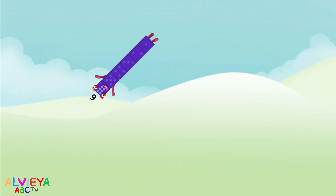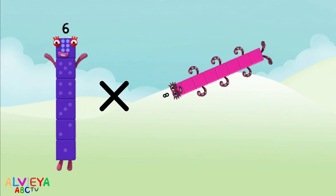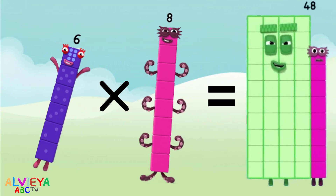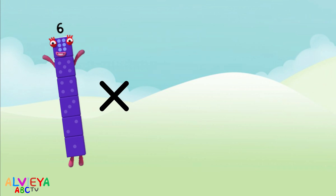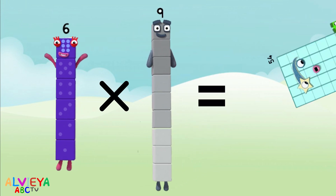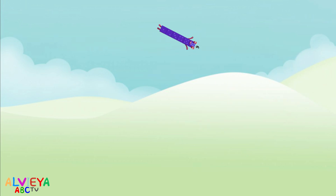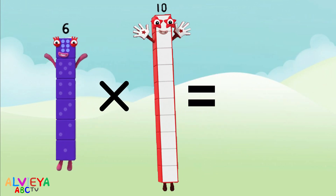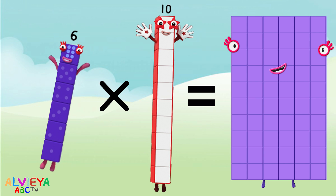Six times eight equals forty-eight. Six times nine equals fifty-four. Six times ten equals sixty.